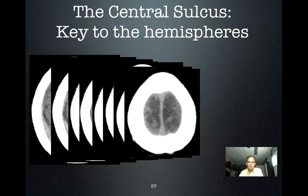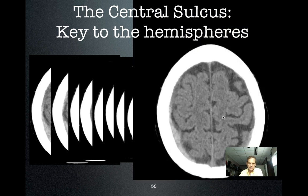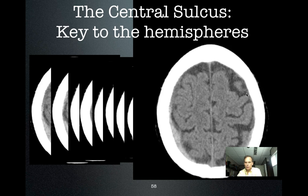Cingulate sulcus — go forward and to the right, go forward and to the left — and you'll find the central sulcus. The central sulcus divides the frontal lobe from the parietal lobe, the precentral gyrus from the postcentral gyrus, which is to say motor cortex from sensory cortex.